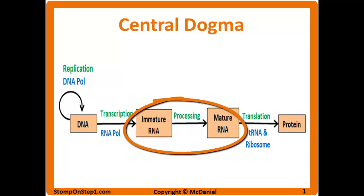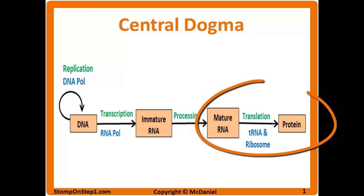The immature RNA is going to be processed by having things like a 5' cap and poly-A tail put on it, as well as having the introns spliced out and the exons joined together to give you mature RNA. Finally, that RNA is going to be acted on by the ribosomal RNA, or just the ribosome, and the tRNA via the process of translation, which turns the RNA into protein.